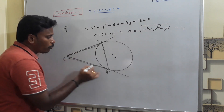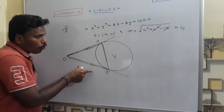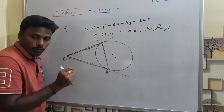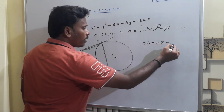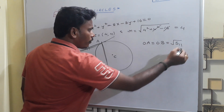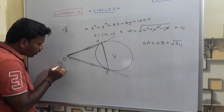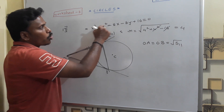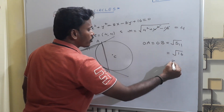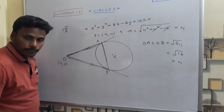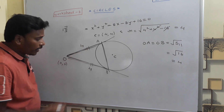OA and OB are the tangent lengths, both equal to √S₁₁. Substituting the origin (0, 0) into the circle equation gives S₁₁ = 16, so √S₁₁ = 4. Therefore OA = OB = 4.